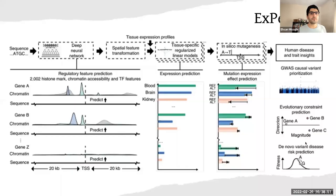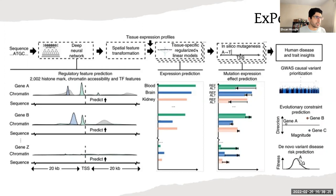ExPecto is another algorithm with three components: a deep convolutional neural network trained on chromatin profiling data that converts sequences to regulatory features; a spatial feature transformation module; and a linear model that predicts gene expression from non-linear regulatory representations. Importantly, it works on a non-linear basis, which better reflects biological reality.